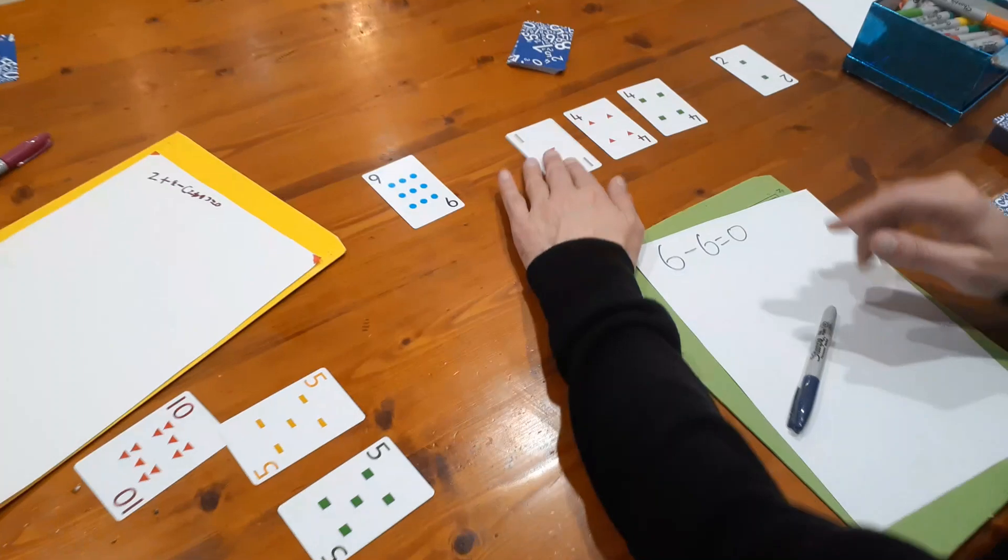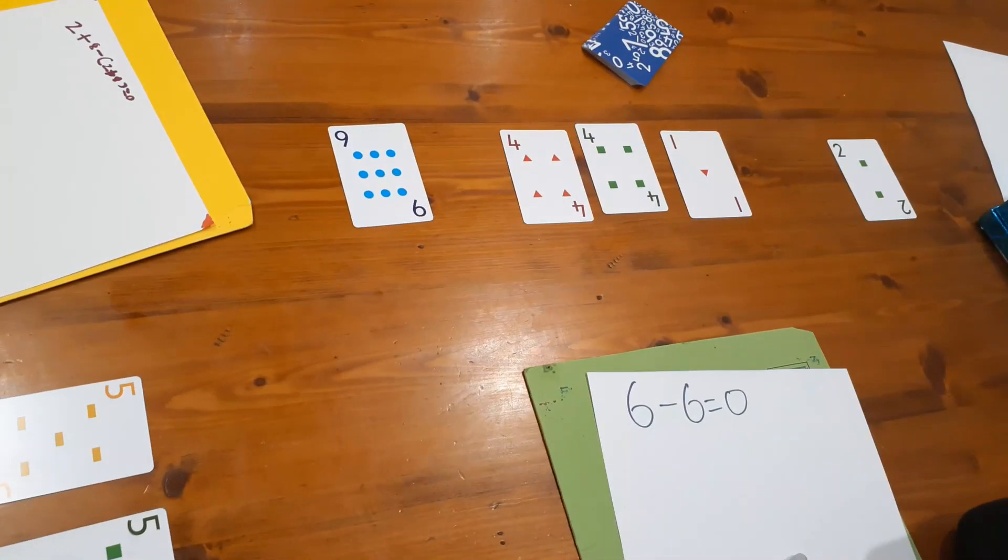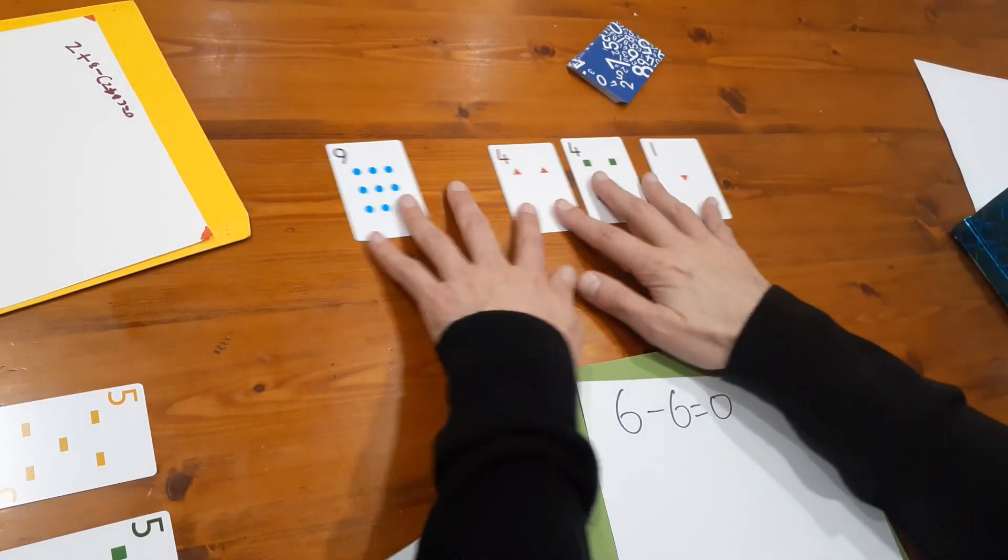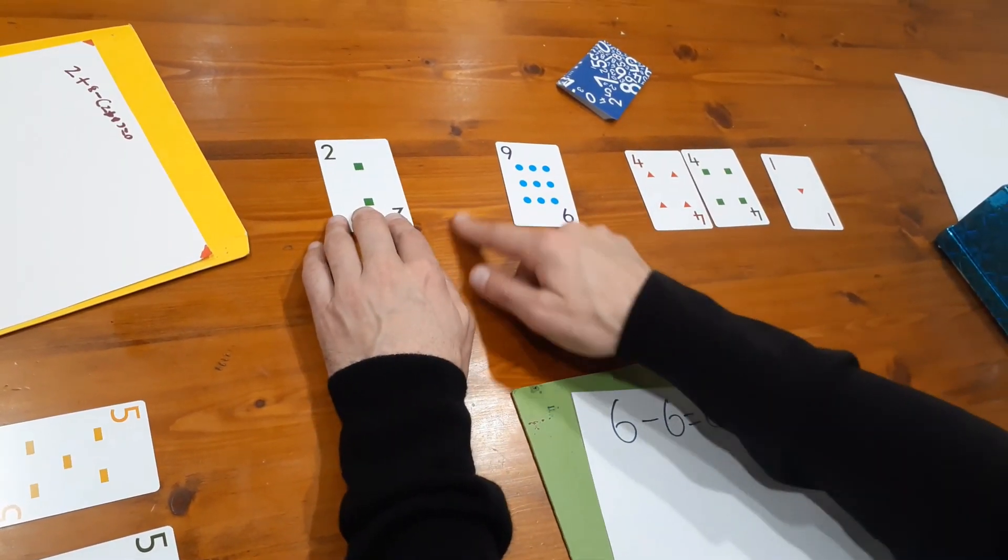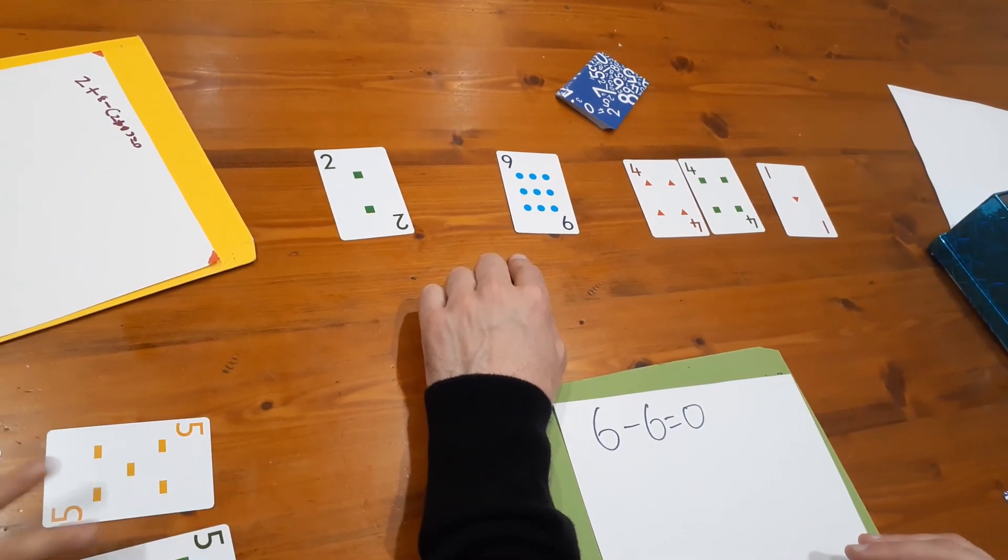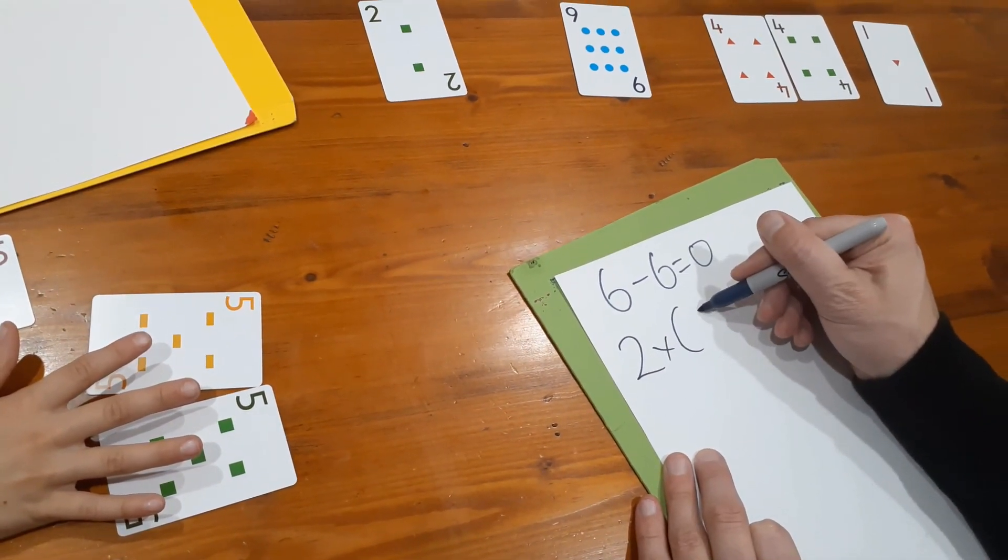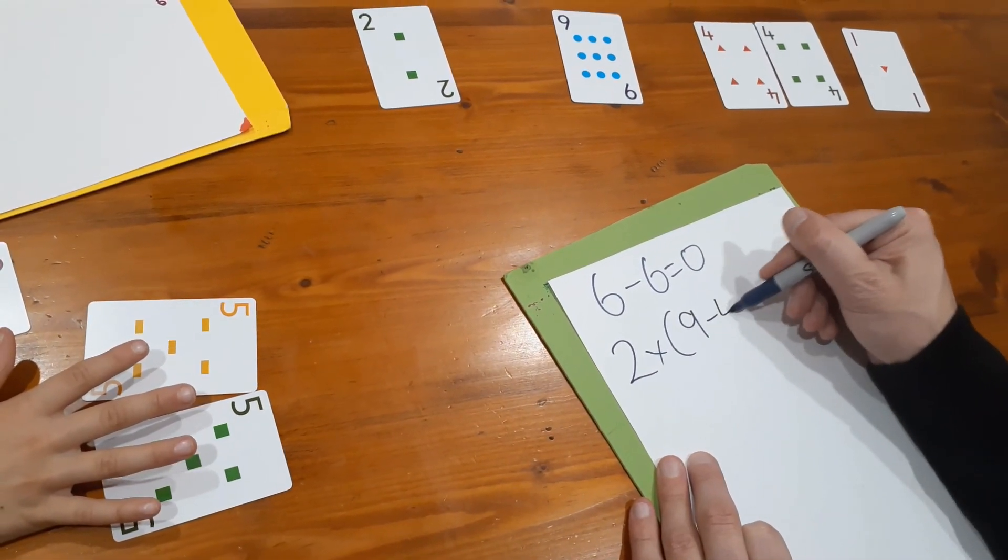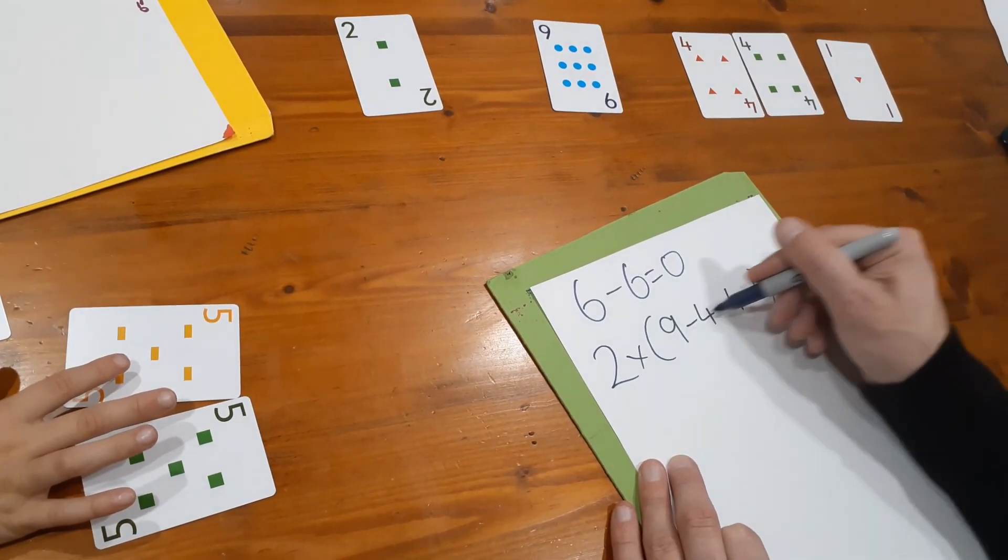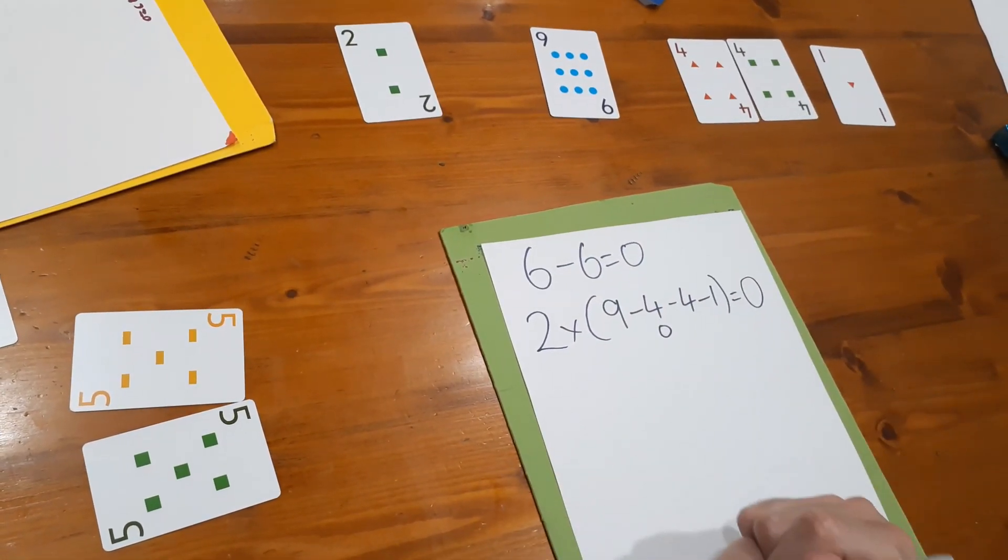Okay, so I'm going to do nine take away four take away four take away one. So nine take away four equals zero. And I'm going to put all of that in brackets, and at the front I'm going to put two times. So two times zero is zero. So I'm going to write it like this. Two times, open the brackets, nine take away four take away four take away one. So the brackets part equals zero. So then two times zero is zero. So that's a five-pointer.